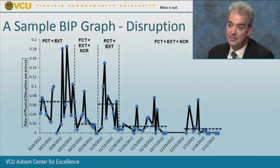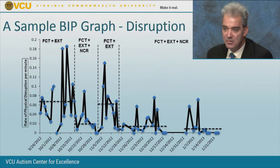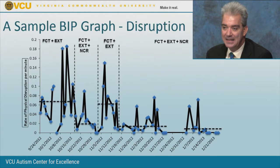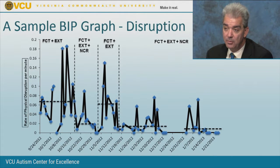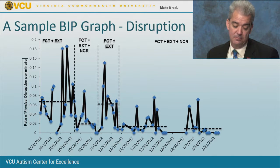Here's another example: a treatment in place with FCT and extinction, then adding non-contingent reinforcement. Little dashed lines show the means. With FCT plus extinction, the rate was higher than when NCR was in place. When NCR was added, problematic behaviors were much lower for this particular person's disruptive behavior.